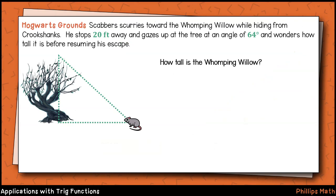Next, we head to the Hogwarts grounds where Scabbers is escaping from Hermione's cat Crookshanks. He's going to seek refuge under the whomping willow here, but before doing so, he pauses 20 feet away to admire the magical tree. He looks up to the top of the tree, tilting his head at a 64 degree angle, and wonders how tall it is.